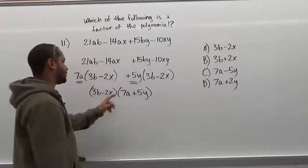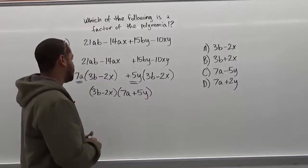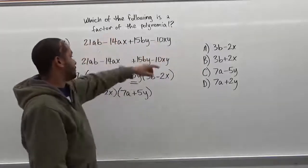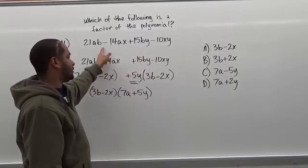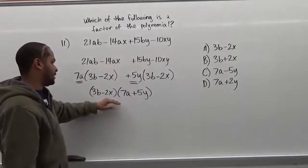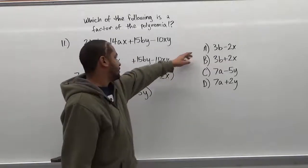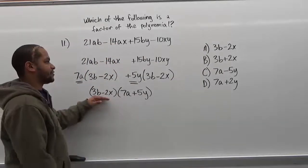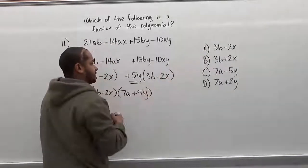Now that we completed factoring this, all we have to do is match one of these two factors to the correct answer here, because we're looking for which of these are a factor of the polynomial. So here we have 3b minus 2x, and we see the list. It's our first one on the list here. So after comparing the first one to all the answers here, we have our solution is a.